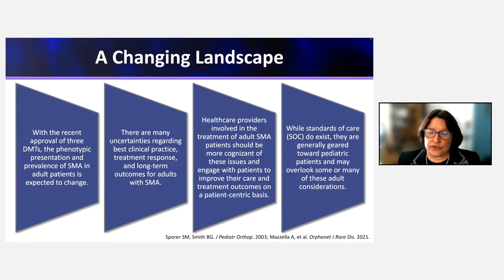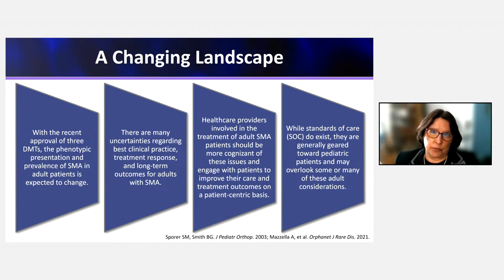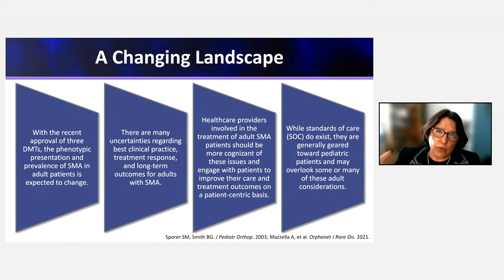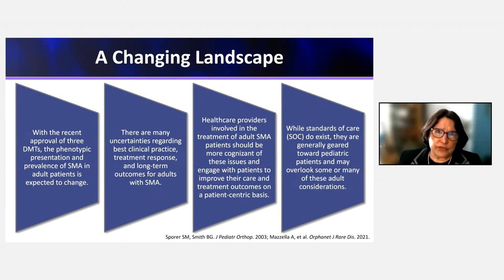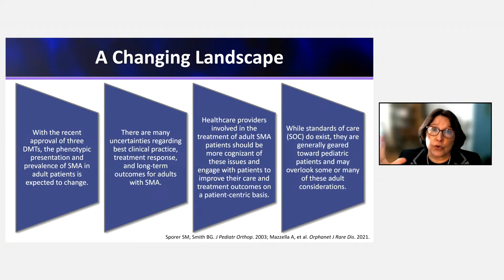We're still working on the best approach, and more resources need to be applied. Importantly, the natural history of SMA involves decline over time — it slows as patients age but remains measurable. On the MFM, there is a decline of approximately 1.2 to 1.7 points per year. Therefore, maintaining current function is a very important and acceptable outcome measure for older, weaker patients.